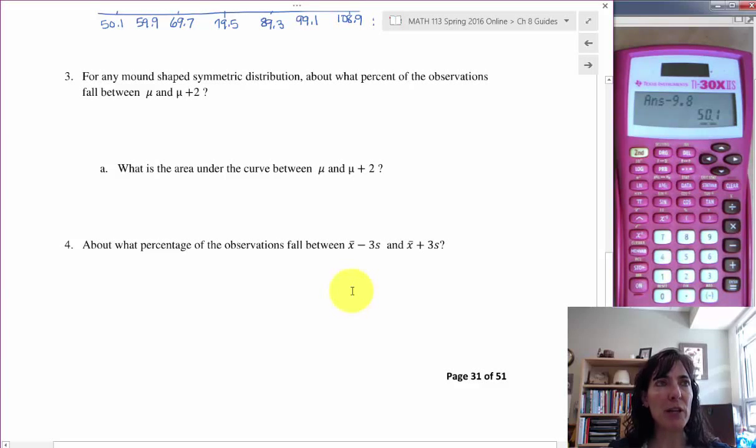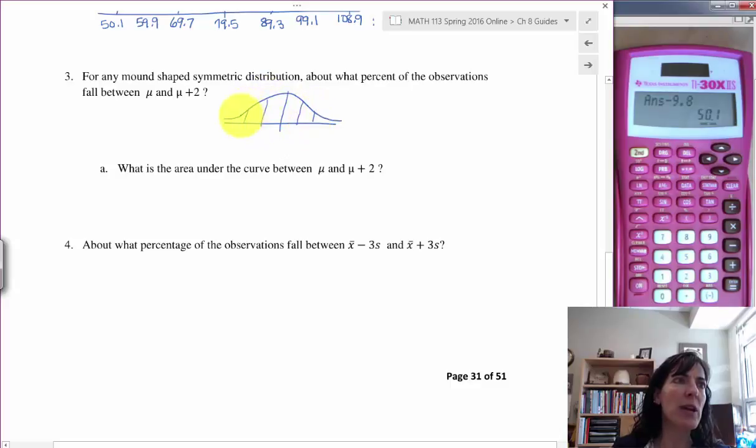For any mound-shaped symmetric distribution, about what percent of observations fall between mu and mu plus 2? I'm thinking about the distribution. We're talking about here's our mu and here is our mu plus 2, and that's supposed to have a sigma there, plus 2 sigma. So I don't know where the sigmas went.